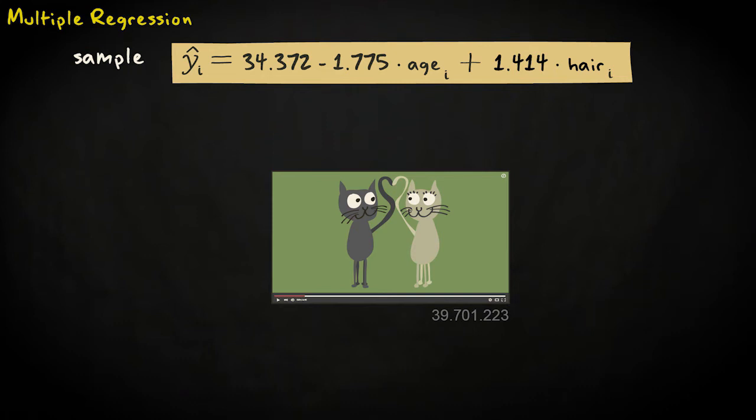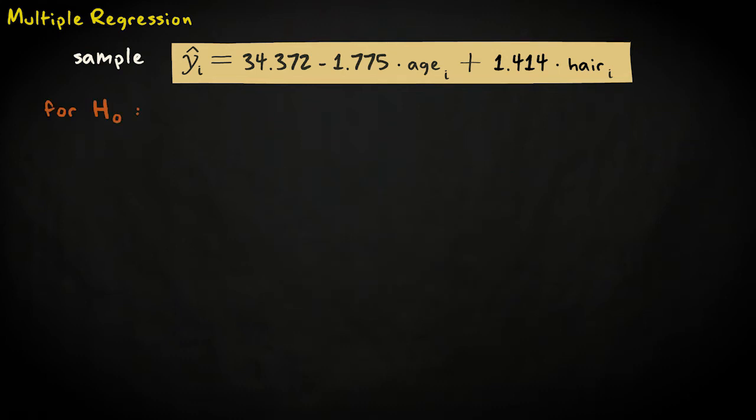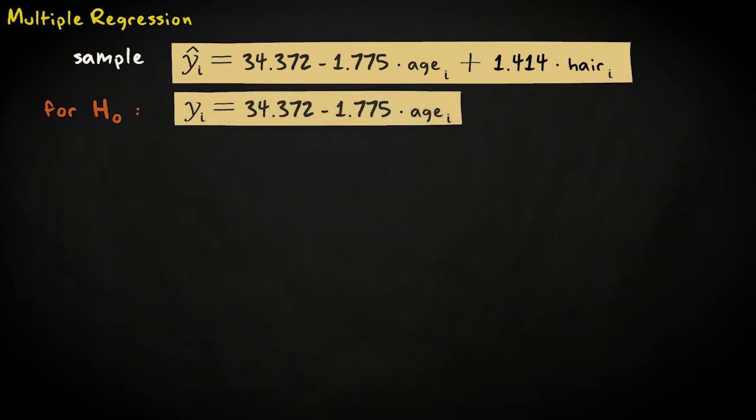We can visualize this model by considering the relation between cat age and video popularity at particular values of hairiness. Say we take hairless cats, with a hairiness score of 0. Given this hairiness score, what is the relation between age and popularity? Well, if we fill in 0 in the equation, we simply get y hat sub i equals 34.372 minus 1.775 times age sub i.